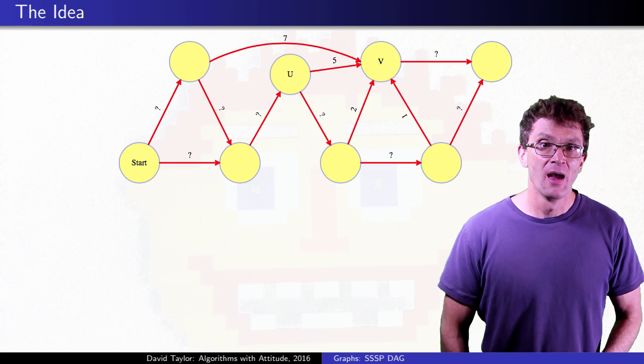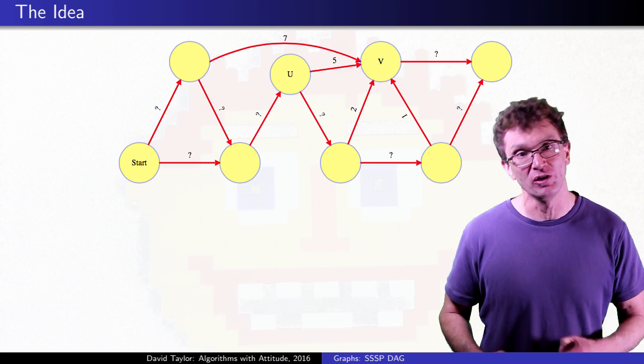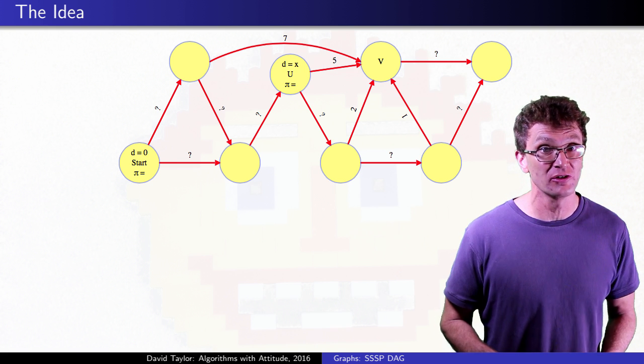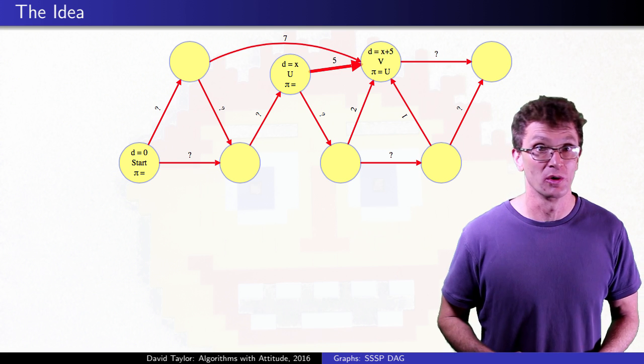The idea is really simple. Imagine that the shortest path to some vertex v has u as v's predecessor. If we know that vertex u has its correct shortest distance and then we relax the u to v edge, v gets its correct shortest distance.